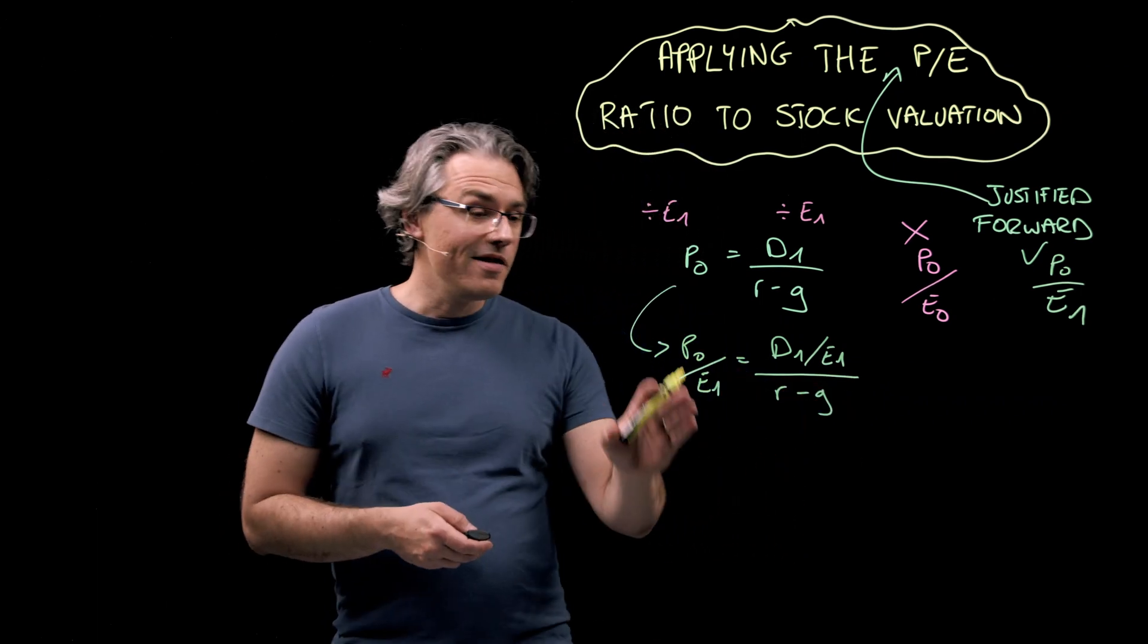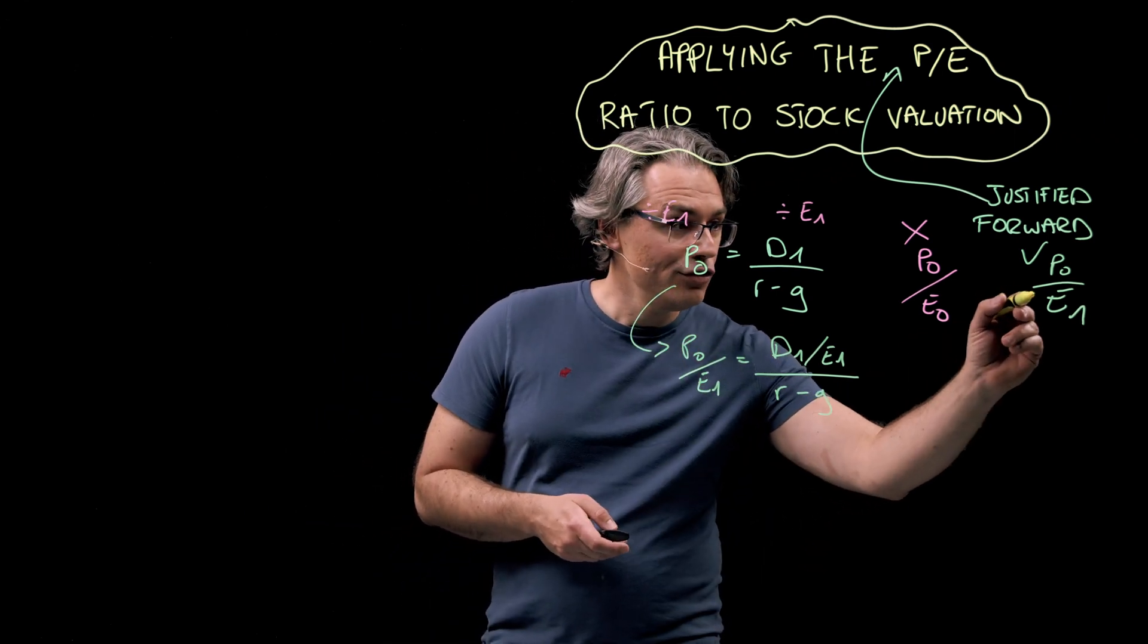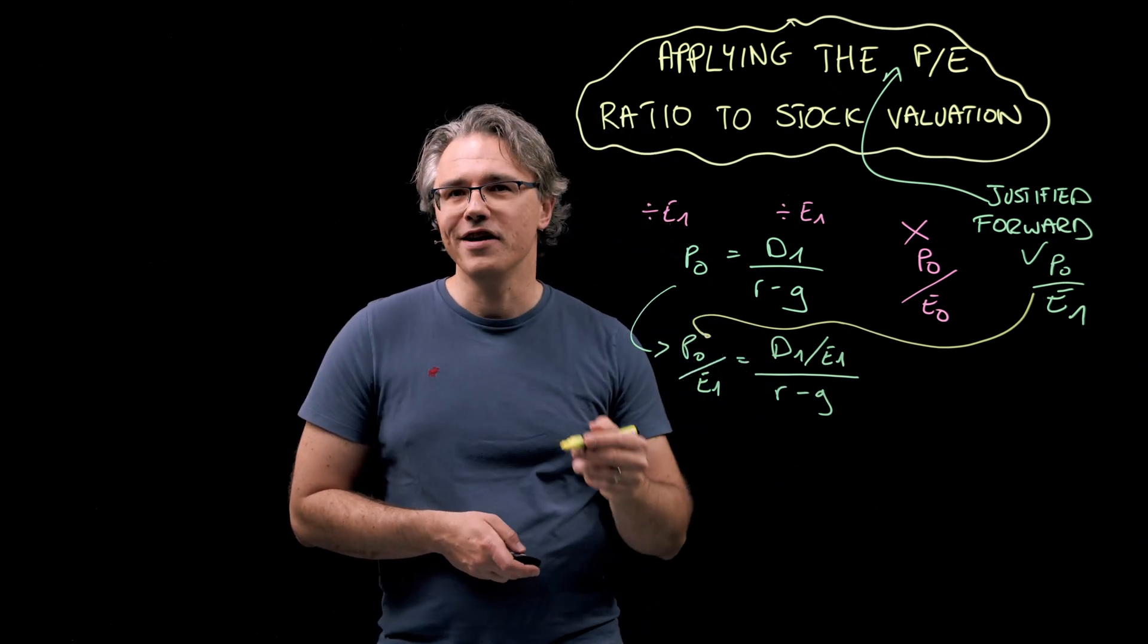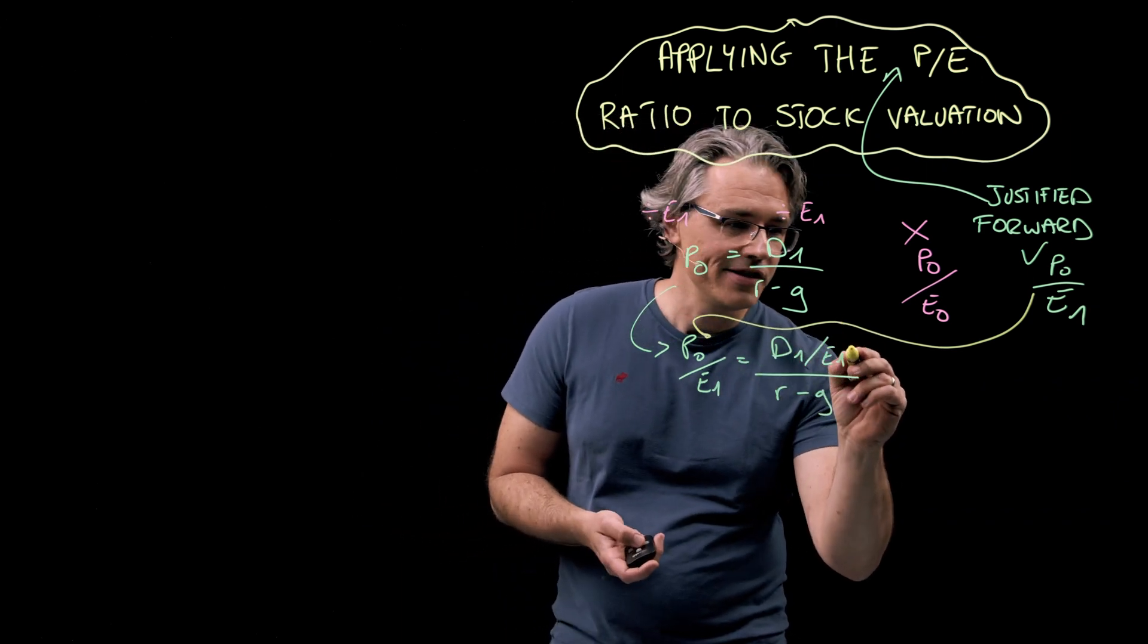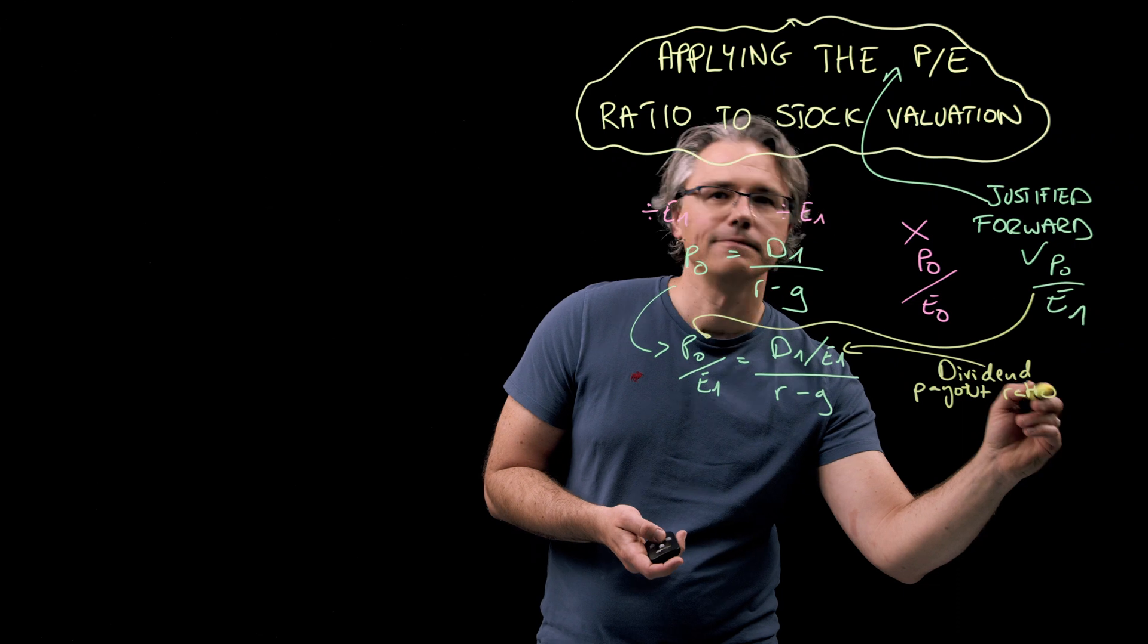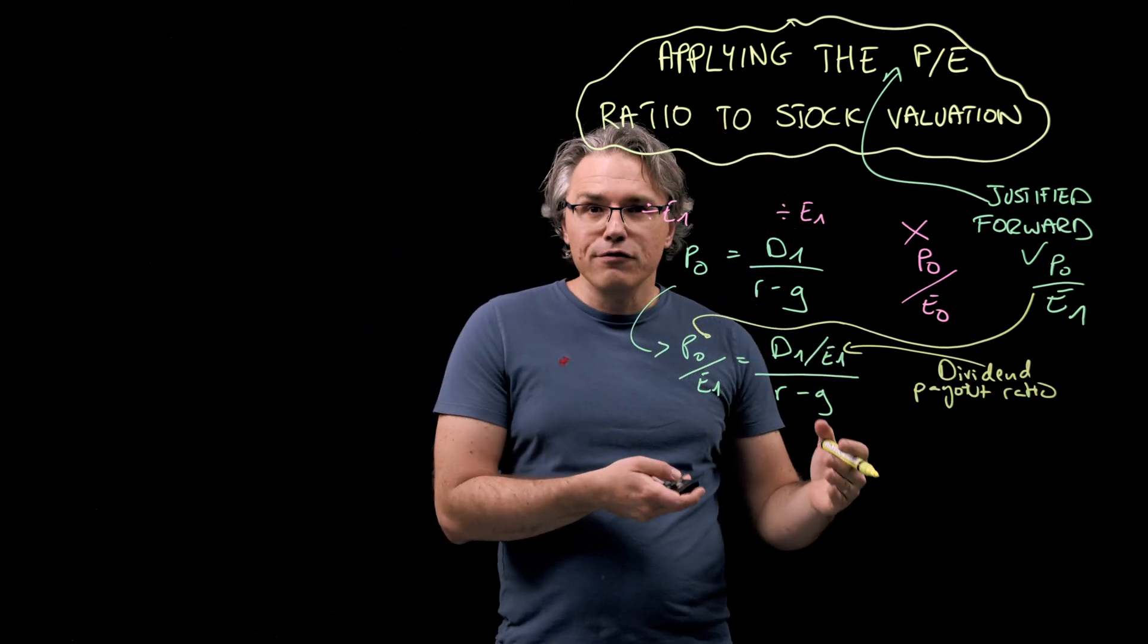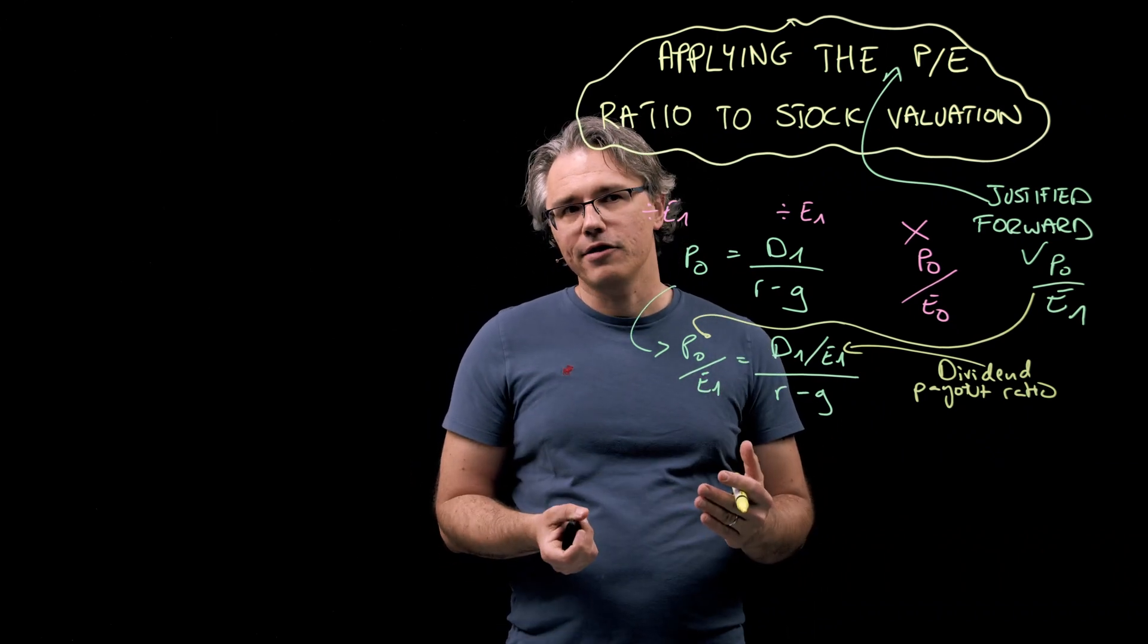And what we've got on the left hand side here is naturally the justified forward price to earnings ratio. And on the right, we've got an expression for the dividend payout ratio. At least as projected for future periods, and not to be confused with the historic or current ratio.